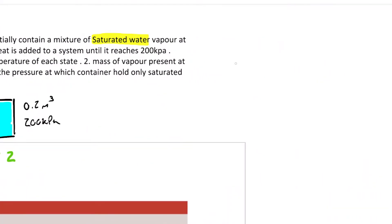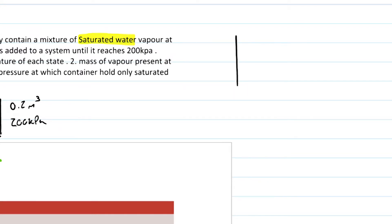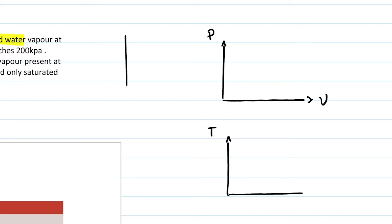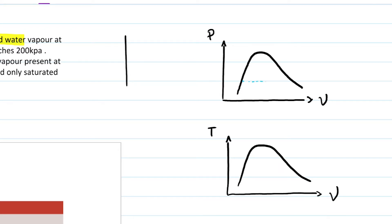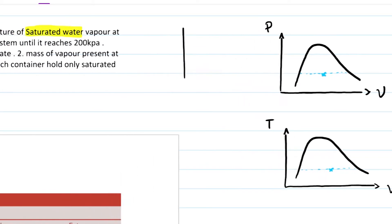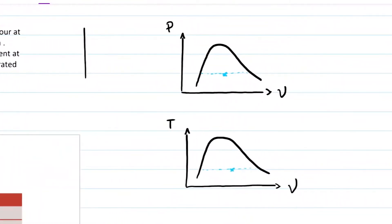Let me draw a PV diagram and a TV diagram. P stands for pressure, T stands for temperature, V stands for specific volume. We already know enough to sketch what this looks like. State one is at 50% quality, so we're in the middle of the dome. As we add heat to the system, we're going to increase the pressure and temperature, but we will not change the specific volume — because the volume is fixed in a rigid container.